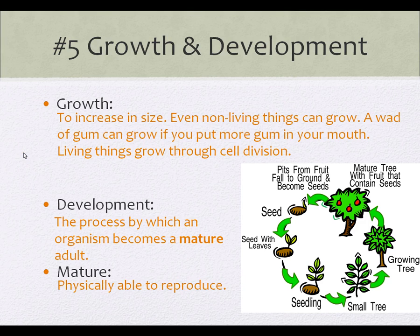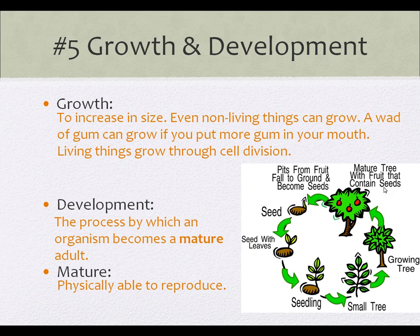You are mature after you go through the process of puberty. A tree is a good example — a tree grows, obviously, and it becomes mature when it can reproduce. Some oak trees don't become mature until they're close to 30, 40, even 50 years old.